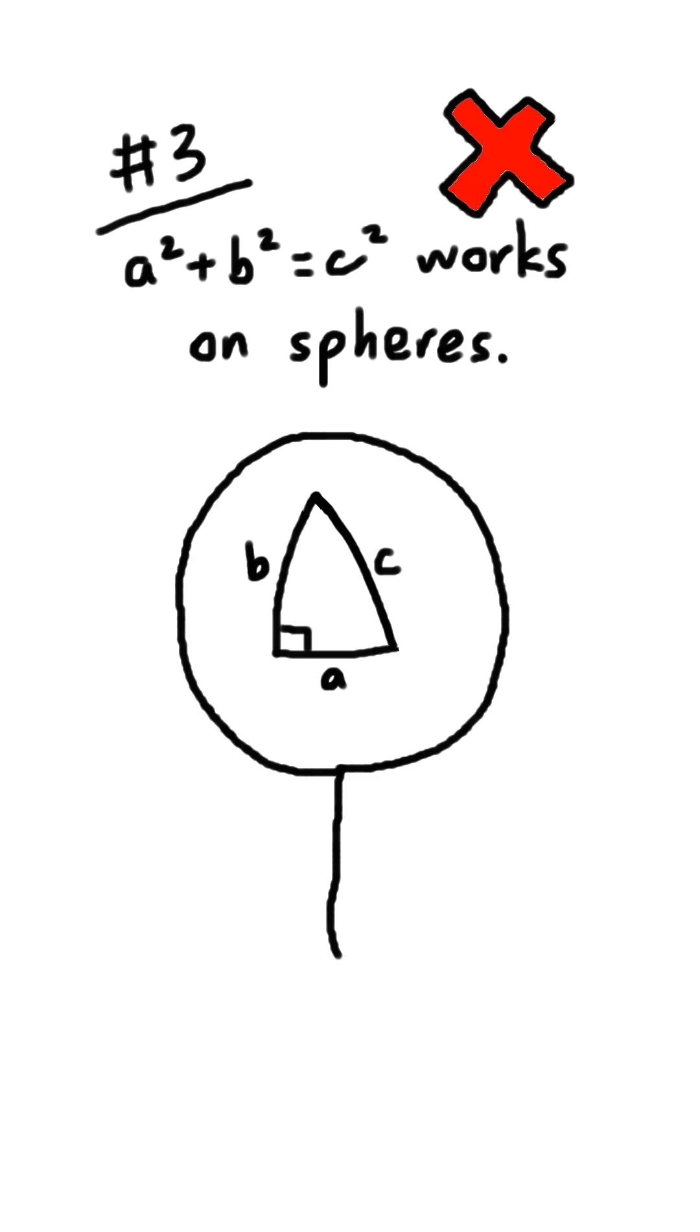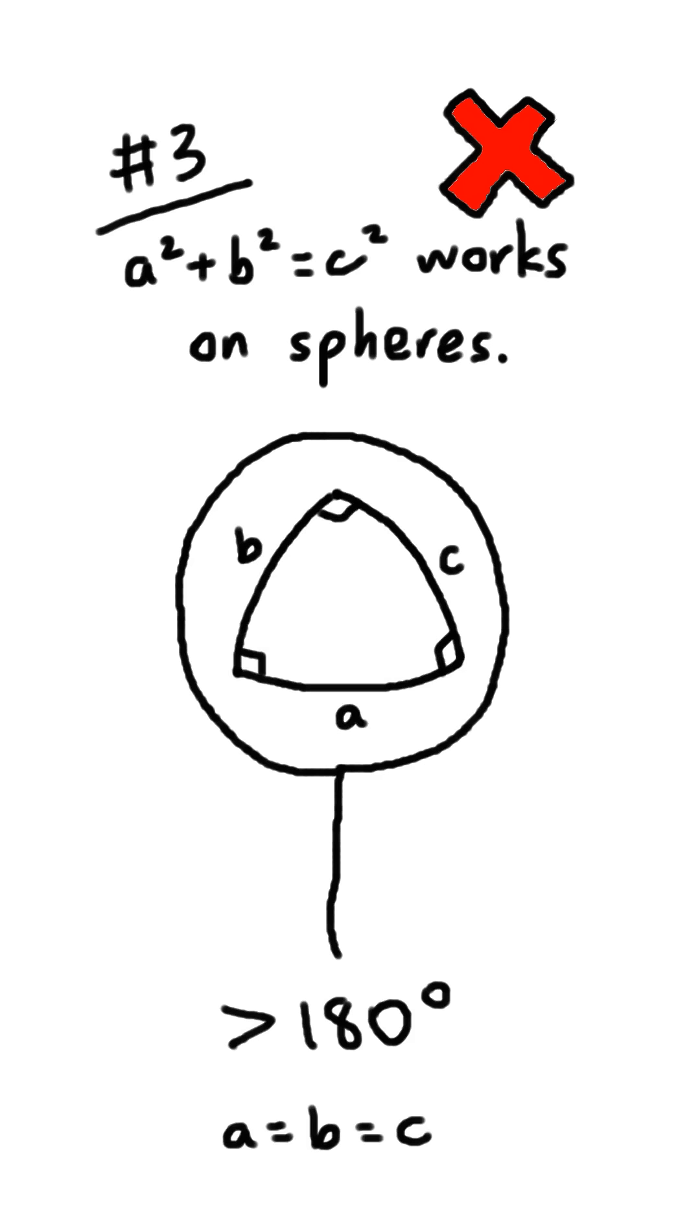The third fact is fake, because on a sphere, the angles on a triangle don't add up to 180 degrees, so you can have right triangles that are also equilateral triangles, leading to a bunch of contradictions.